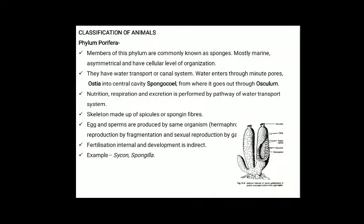Phylum Porifera: members are commonly called sponges. They are marine, asymmetrical, and have cellular level of organization. They have a water transport or water canal system. Water enters through minute pores called ostia into a central cavity called spongocoel, from where it goes out through the osculum. Nutrition, respiration and excretion are performed by the water transport system. Skeleton is made up of spicules or spongin fibers. Egg and sperms are produced by the same organism — they are hermaphrodites. Reproduction by fragmentation or asexual means occurs. Fertilization is internal and development is indirect. Example: Sycon.